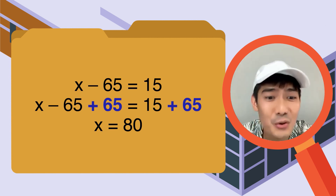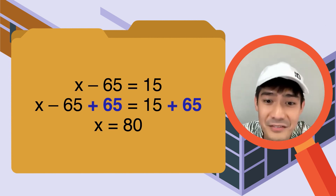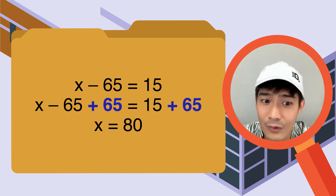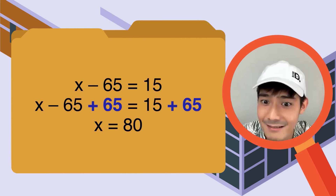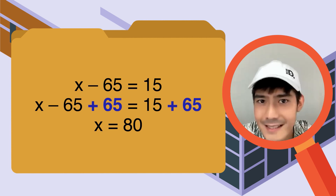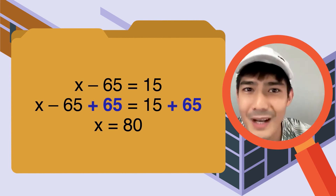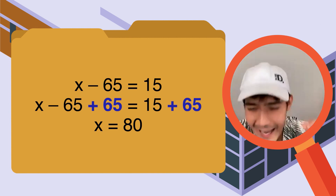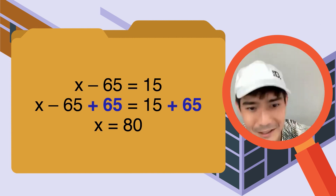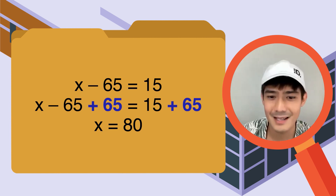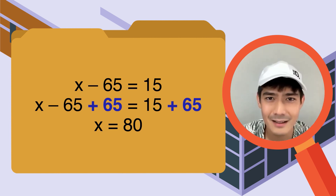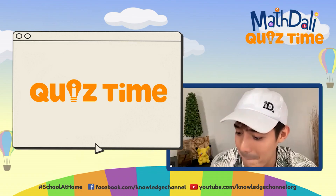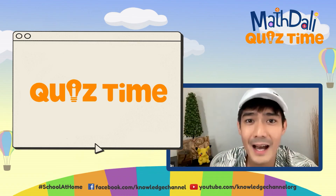80 pesos yung binayad ko — kaya may suklip akong 15 pesos sa 65 pesos worth of isaw. Pag-check natin, tamang-tama yan. But since this is a word problem, we have to put the label: it's 80 pesos. Matusayang ating mga classmates dito. Let's try it out with another challenge — it's time for Math League. Quiz time!